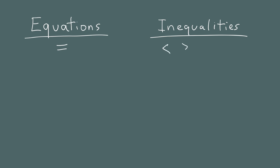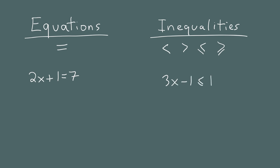The four inequality symbols are: less than, greater than, less than or equal to, and greater than or equal to. An equation is a math puzzle with an equal sign — for example, 2x plus 1 equals 7. An inequality is a math puzzle with one of these four inequality symbols, like 3x minus 1 is less than or equal to 12.